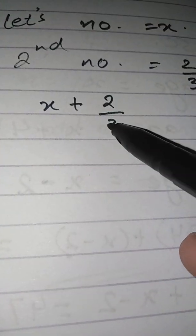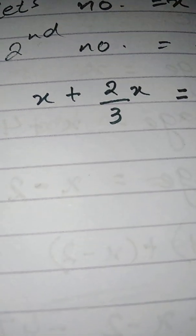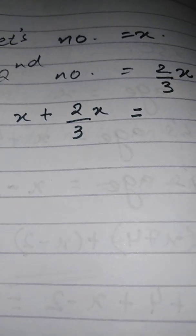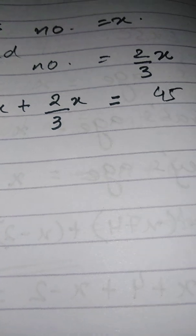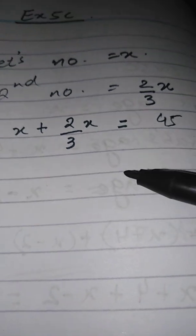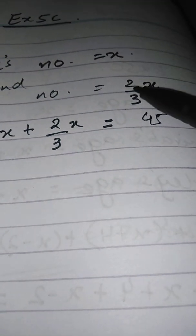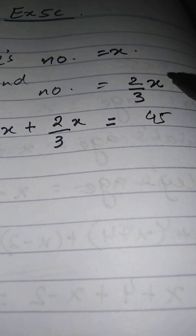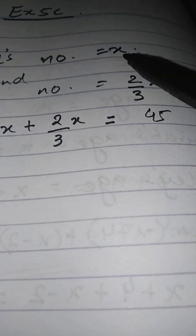They said that their sum is equal to 45, so we write: X plus two-thirds X equals 45. Always remember, the whole number is larger and the fraction is the smaller number.